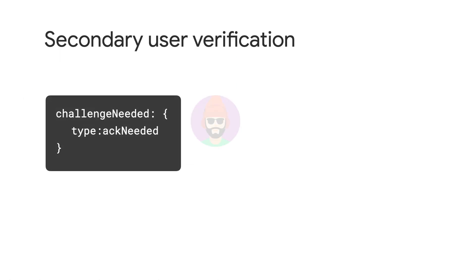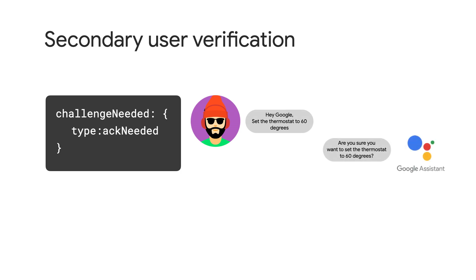When enabling voice control for features like temperature or humidity settings, adding secondary user verification to your fulfillment will ensure Google Assistant understands the user's request and changes the smart device settings to exactly what the user wants.